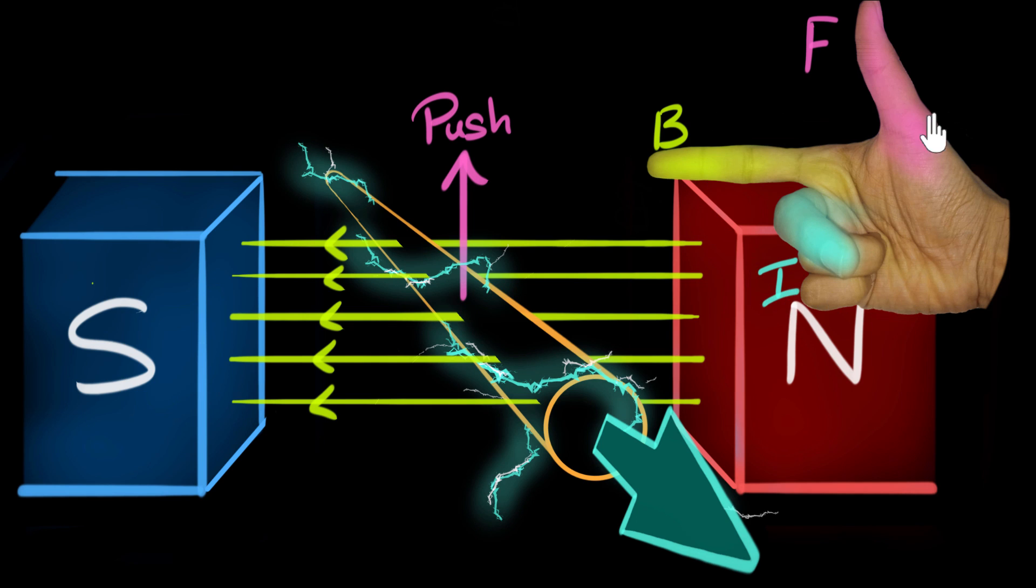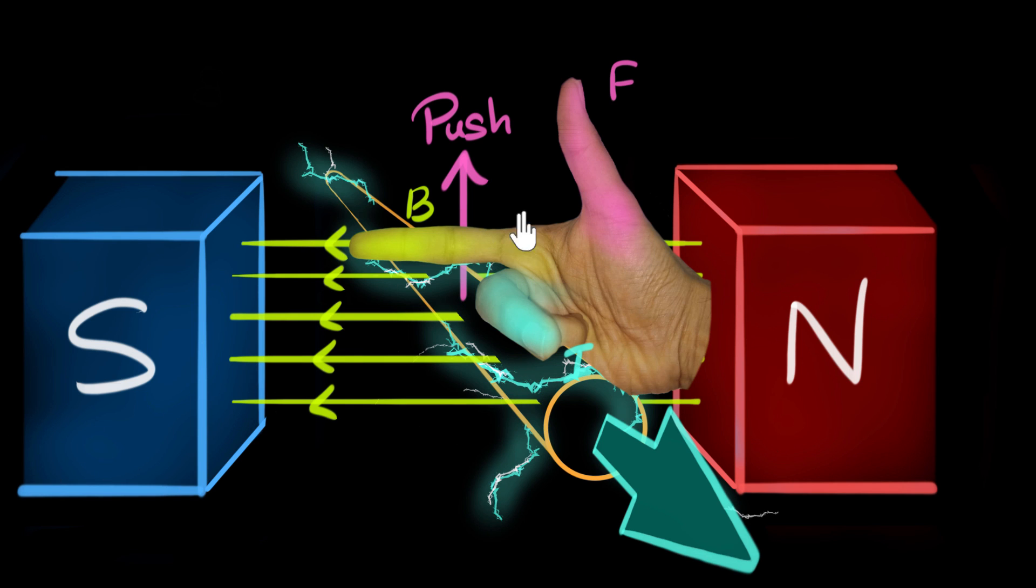So if you were to use this right hand rule here, we can see the force is up, the magnetic field, the forefinger is this way, and the middle finger is pointing out of the screen, just as our current.